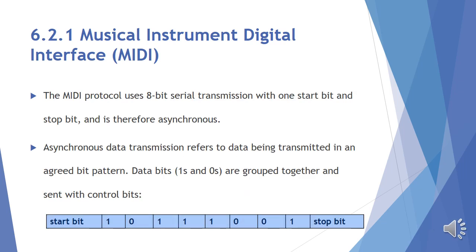MIDI is essentially a communications protocol that allows electronic musical instruments to interact with each other. The MIDI protocol uses 8-bit serial transmission with one start bit and one stop bit, and is therefore asynchronous. I have drawn an 8-bit serial transmission diagram for you on screen. Asynchronous data transmission refers to data being transmitted in an agreed bit pattern — data bits (ones and zeros) are grouped together and sent with control bits, as you may have studied back in chapter 2 about asynchronous and synchronous data transmission.